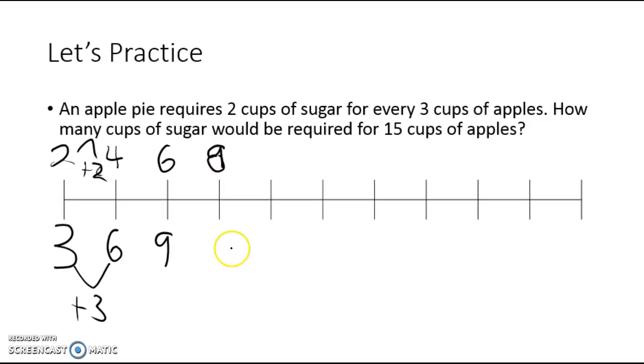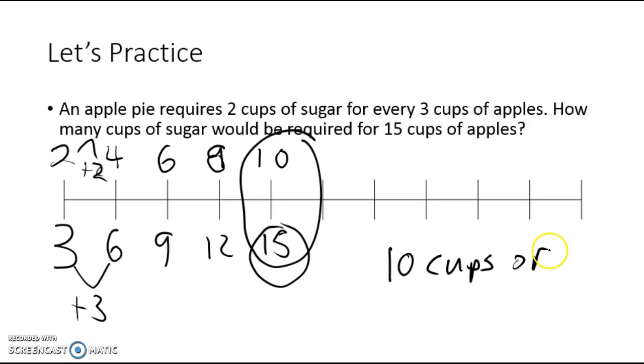Sorry, 8 here and 12 here. We would get 10 here, 15 here. And we can see that's the answer to our problem. We were waiting for this to become a 15. So that would tell me that the number of cups of sugar required for 15 cups of apples would be 10 cups of sugar.